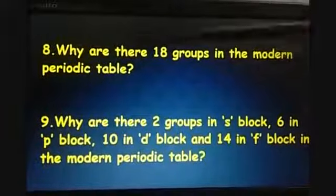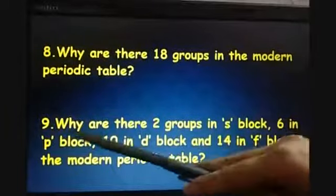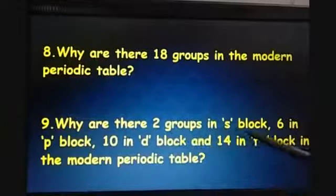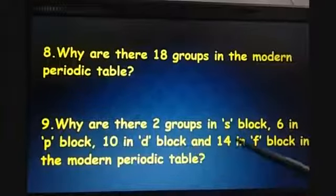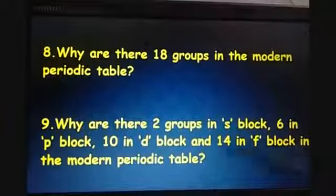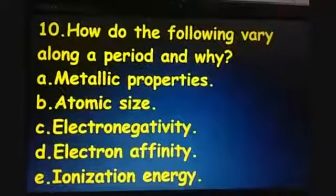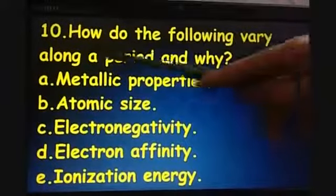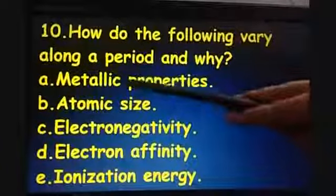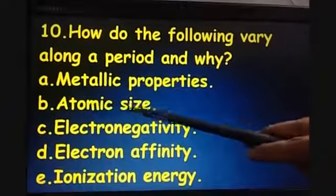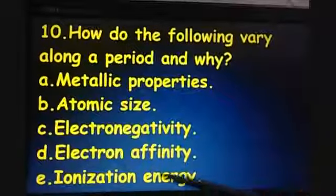Question number 8: why are there 18 groups in the modern periodic table? Question number 9: why are there 2 groups in S block, 6 in P block, 10 in D block and 14 in F block in the modern periodic table? Question number 10: how do the following vary along a period and why — A. Metallic properties, B. Atomic size, C. Electronegativity, D. Electron affinity, E. Ionization energy?